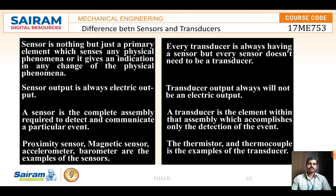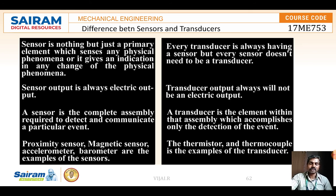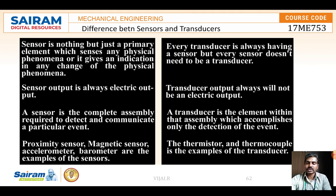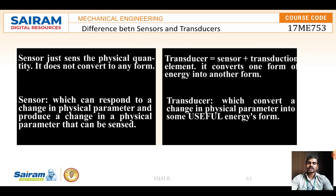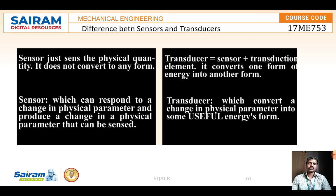A transducer changes energy but can have various output forms. For example, a thermocouple receives heat energy and converts it, generating an EMF. Examples of sensors include magnetic sensors, accelerometers, and barometers — which are pressure-measuring devices. These all take input from the source being measured. A sensor is a complete assembly required to detect and communicate a particular event, while a transducer is the element within the assembly which accomplishes only the detection of the event. Transducers and sensors are almost similar terms, but the key difference is that a transducer produces a useful energy form at the output.